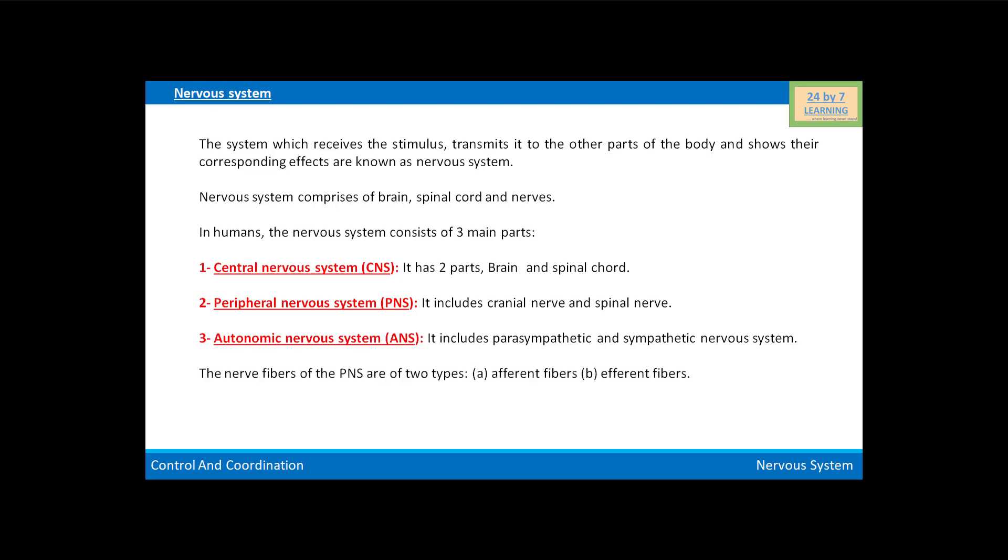The nerve fibers of the PNS, or peripheral nervous system, are of two types: afferent and efferent fibers. The afferent nerve fibers transmit impulses from tissues or organs to the central nervous system. The efferent fibers transmit regulatory impulses from the central nervous system to the concerned peripheral tissues or organs.